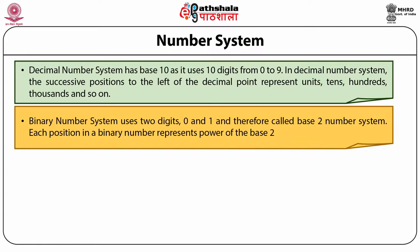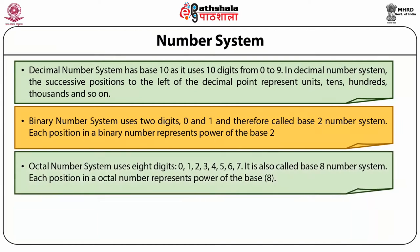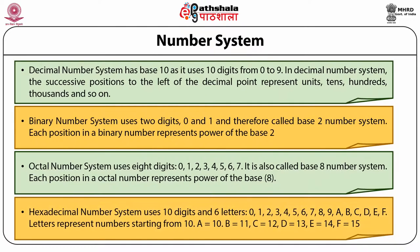The octal number system uses eight digits — 0 to 7 — and is also called the base-8 number system; each position represents a power of the base. The hexadecimal number system uses 10 digits and 6 letters, totaling 16 symbols — from 0 to 9 followed by A, B, C, D, E, F. Letters represent numbers starting from 10: A equals 10, B equals 11, C equals 12, D equals 13, E equals 14, and F equals 15.